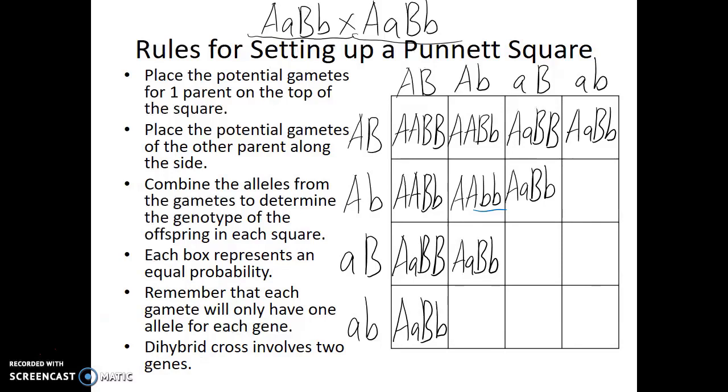Second row, last box: big A, little a, little b, little b. And then second column, last box: big A, little a, little b, little b. In both of these cases, dominant for the A gene but recessive for the B gene.